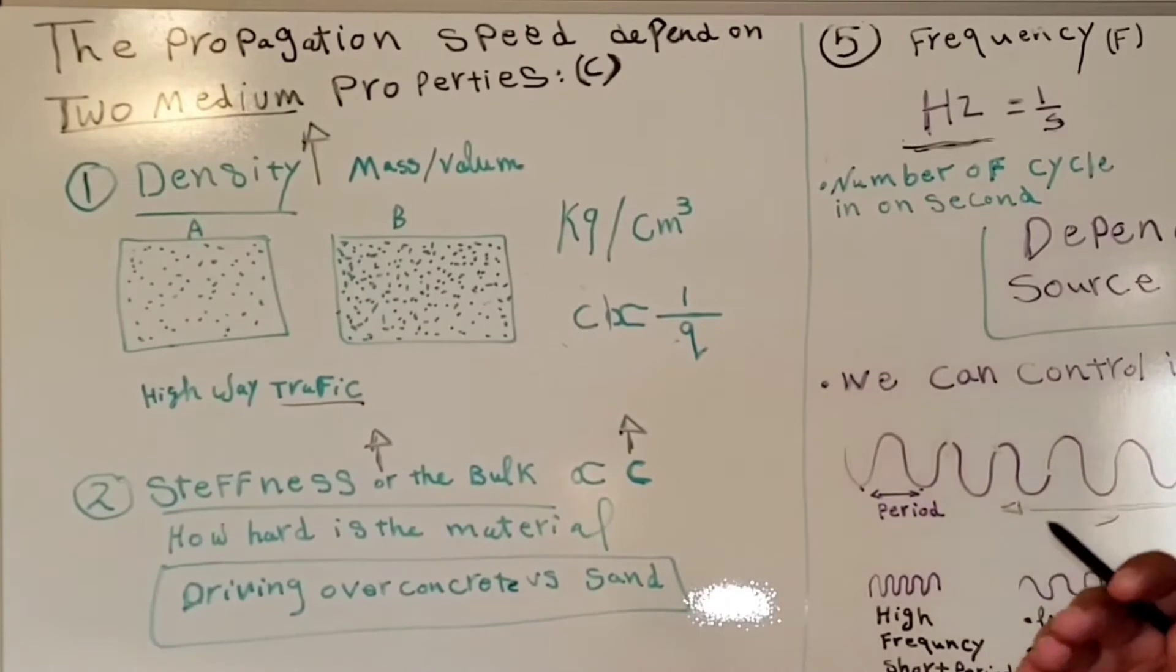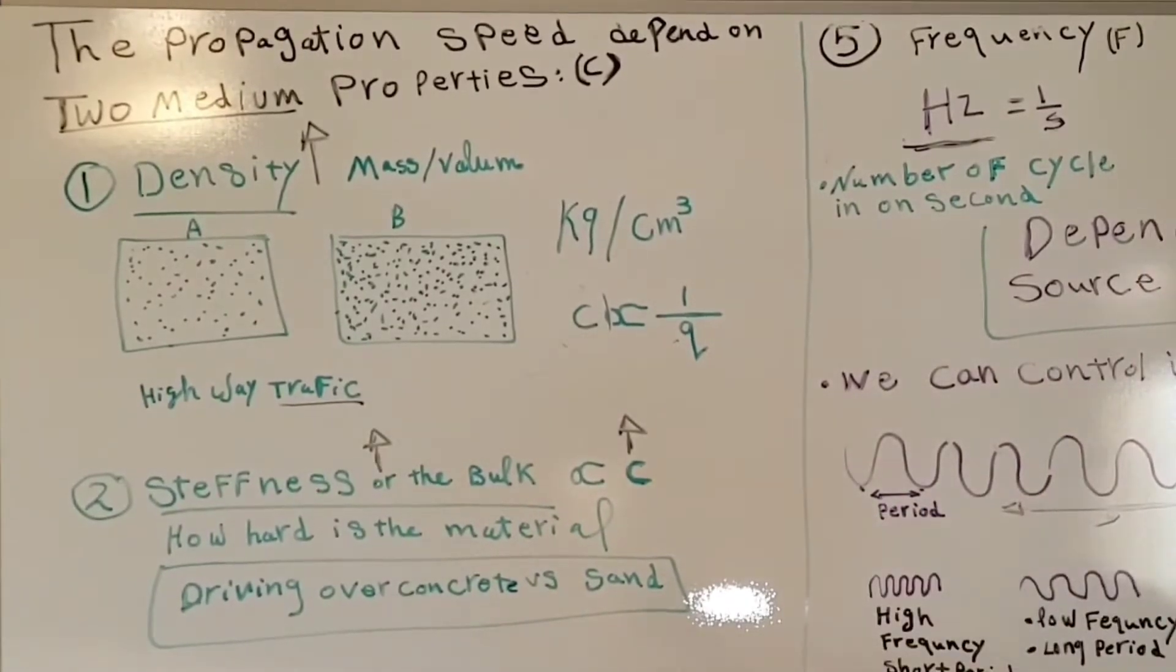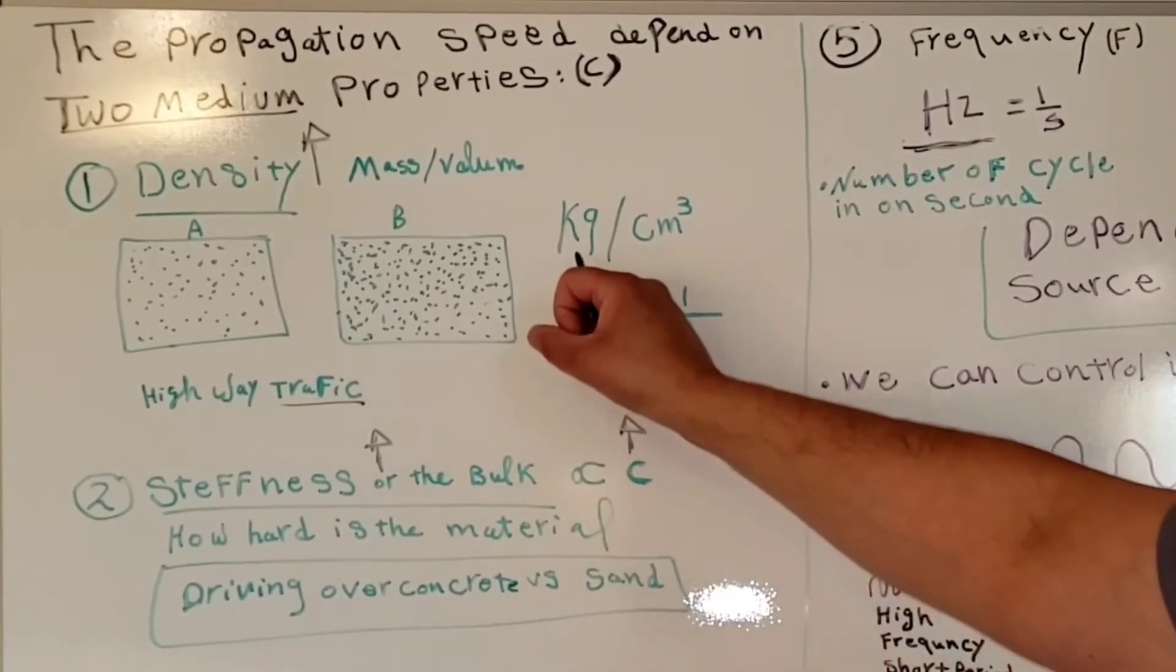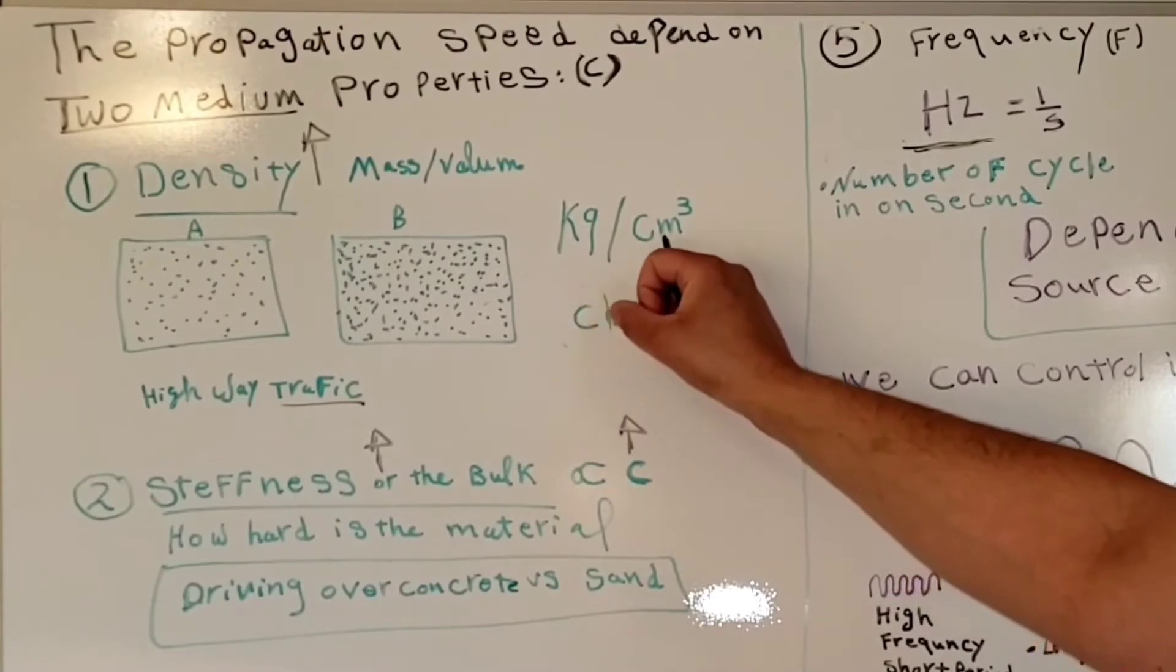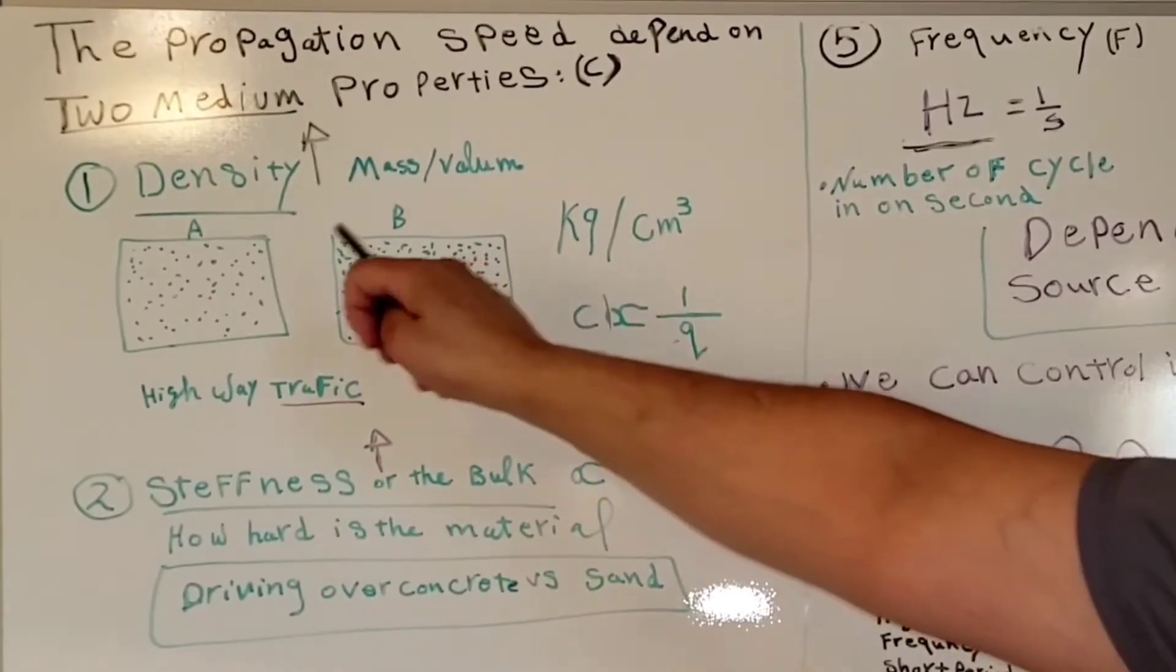That's why we use kilogram per centimeter cubed for density.